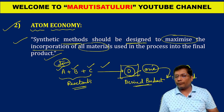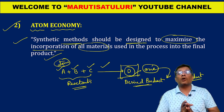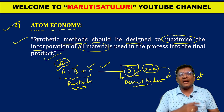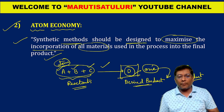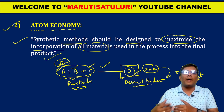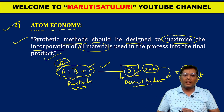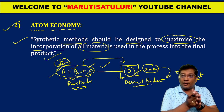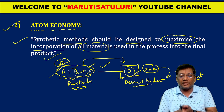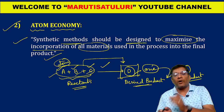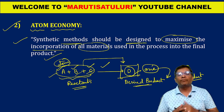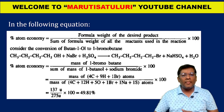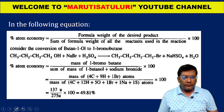As per the atom economy rule, byproducts should not be produced. All the atoms present in the raw materials should be incorporated as much as possible to produce the main desired product. There should be no formation of any byproducts at all. This is atom economy. The formula for percentage atom economy is given below.